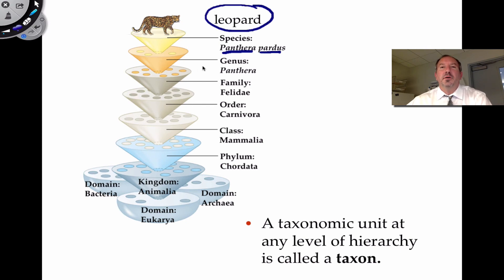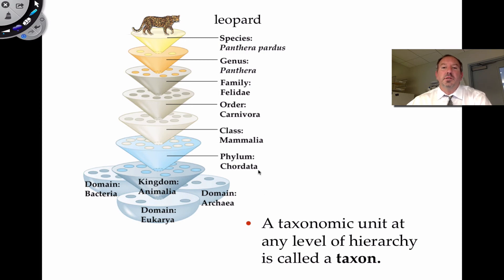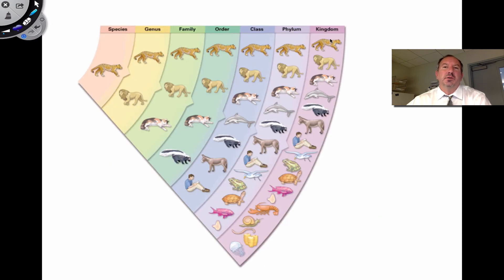Common names mean different things to different people in different places and can cause confusion. We prefer the taxonomic genus-and-species binomial system because it leaves no doubt and is international. Each taxonomic unit at any hierarchical level is considered to be a taxon. There are many animals in phylum Chordata, several within class Mammalia, and eventually you narrow it down to the specific species — like the leopard.